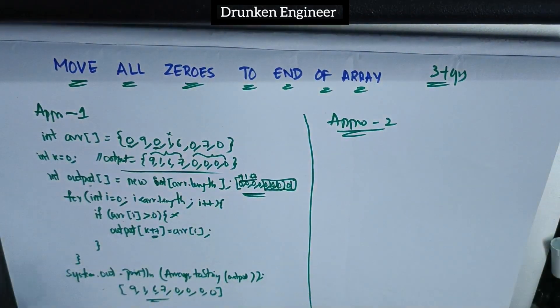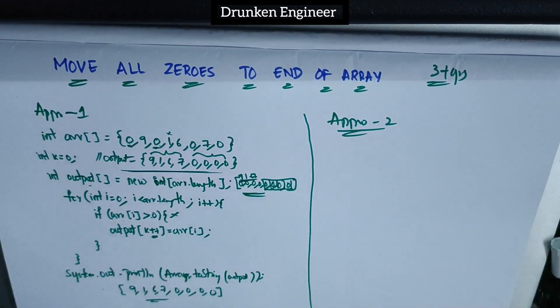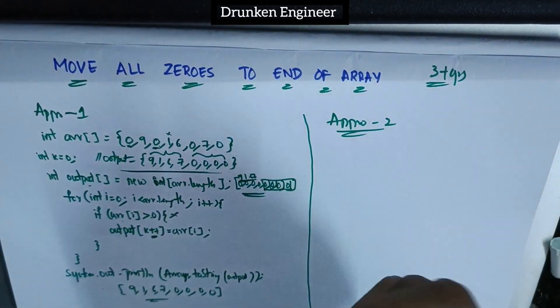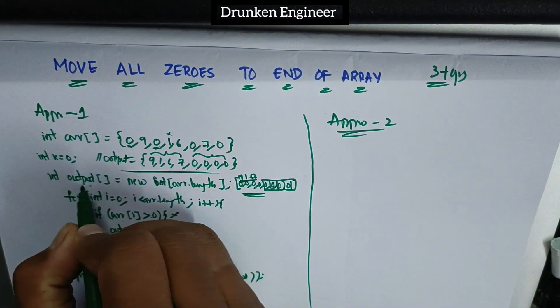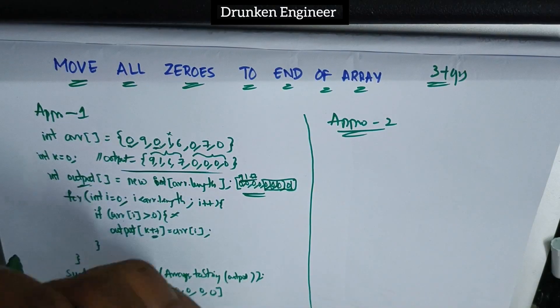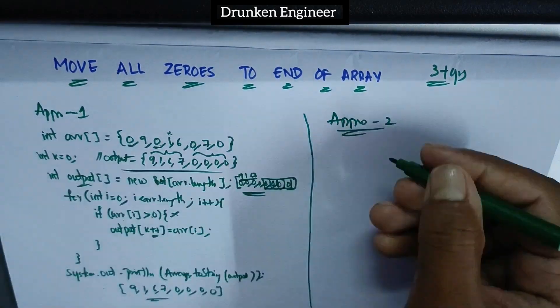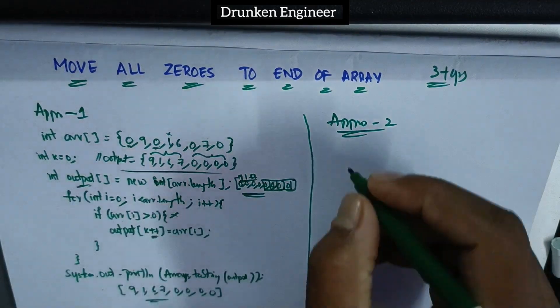Approach two - this solution I wrote in the Metal exam, but the proctor said this is too easy and asked for a second approach where I should not initialize one more array.